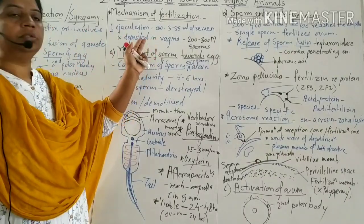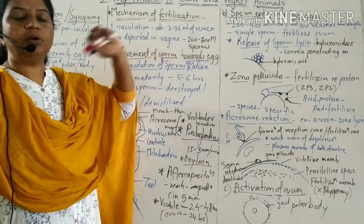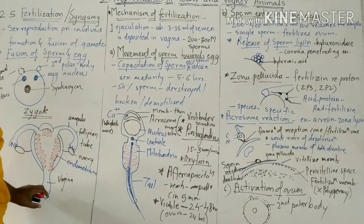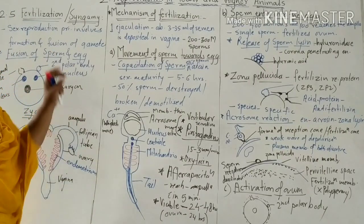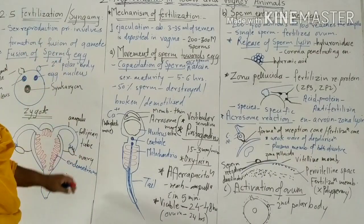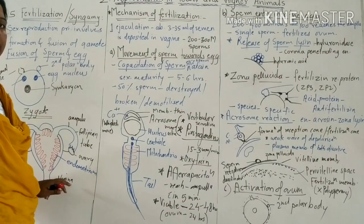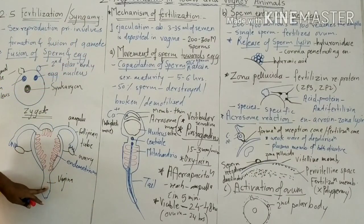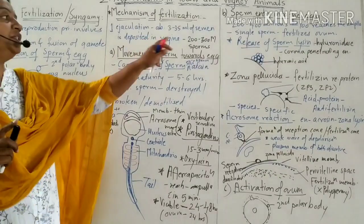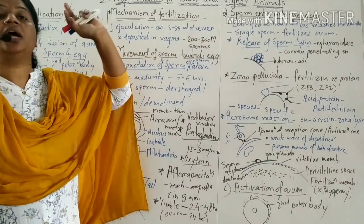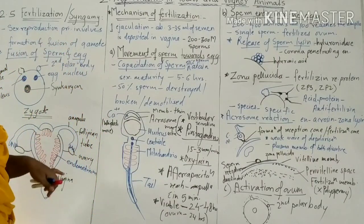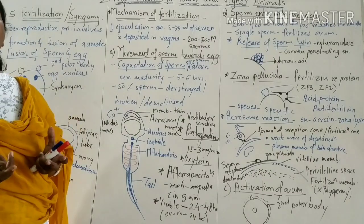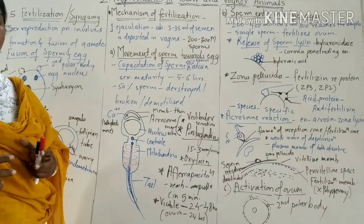The first event: one ejaculation releases about 3 to 3.5 ml of semen. Ejaculation means at one time, this volume of semen is ejaculated and deposited into the vagina of the female. One ejaculation consists of 200 to 300 million sperm. When ejaculated in the vagina, the semen becomes liquefied because semen is initially coagulated.